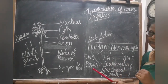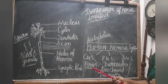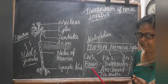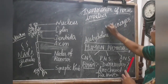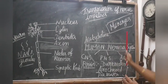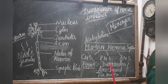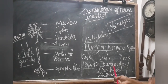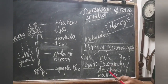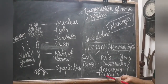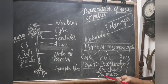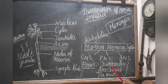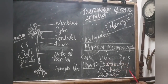The brain is the controlling center and is covered by three connective tissue membranes called meninges. The three membranes are: dura mater, the outermost fibrous layer; arachnoid membrane, the middle delicate membrane; and pia mater, the innermost thin membrane richly supplied with blood.